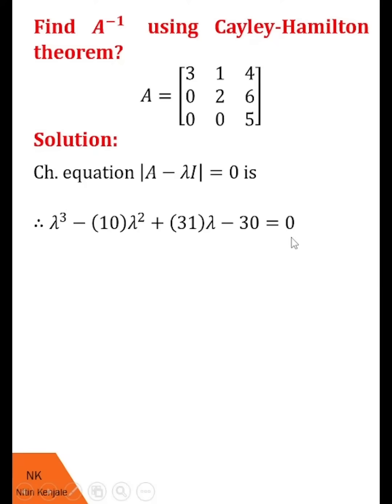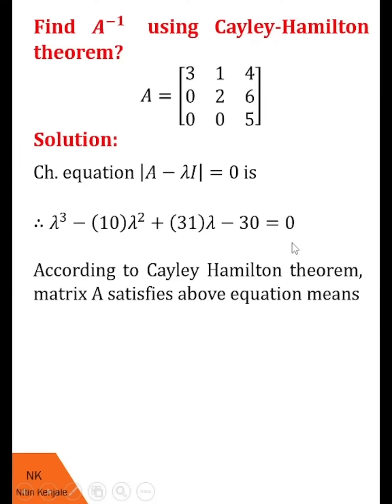In this case, this is its characteristic equation. According to Cayley-Hamilton theorem, this equation is satisfied by matrix A, therefore we get A cube minus 10A square plus 31A minus 30I equal to 0.